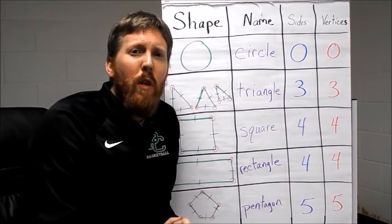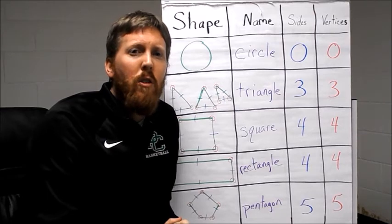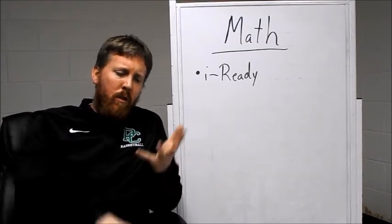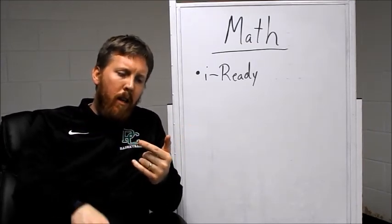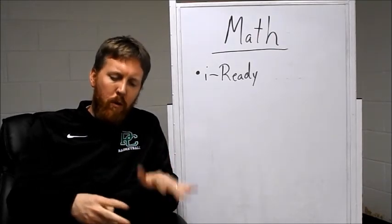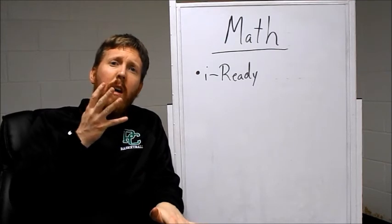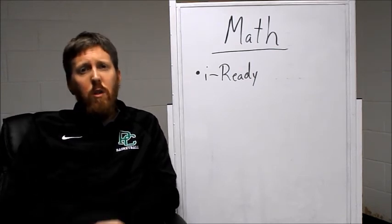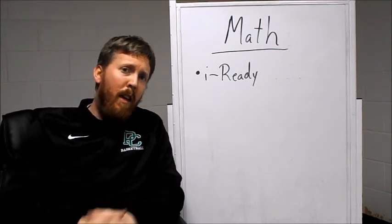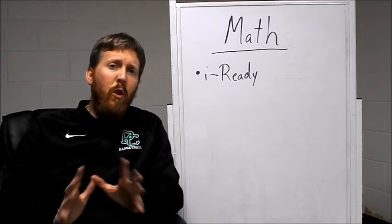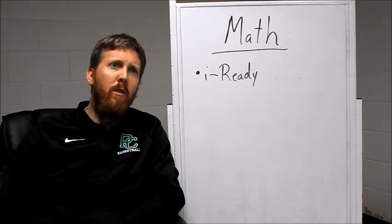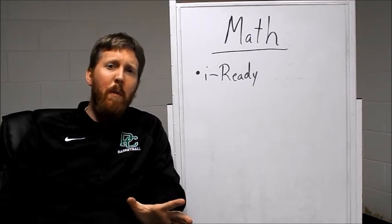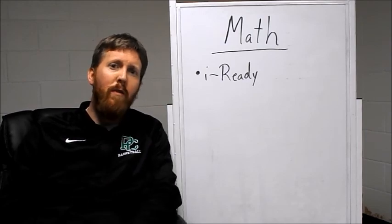That does it for a quick overview of our two-dimensional shapes. I'm not going to ask you to do an application problem today. The only thing in math you have to do is iReady math for 15 minutes. To recap: we talked about two-dimensional shapes — circles, squares, triangles, rectangles, parallelograms, pentagons, trapezoids, hexagons, rhombuses, and octagons. The only homework is to get on iReady math and do it for 15 minutes.